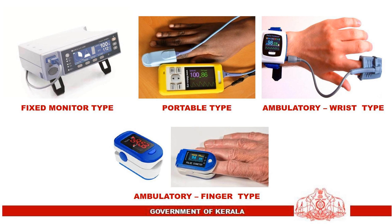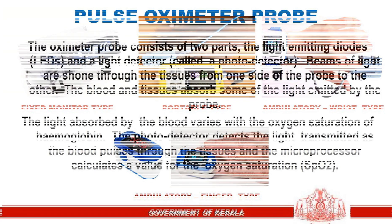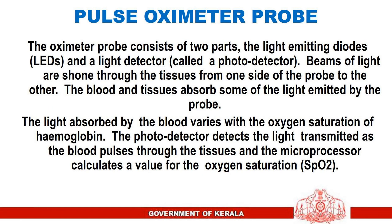The common types of pulse oximeters are: fixed monitor type, portable type, ambulatory wrist type, and ambulatory finger type. The pulse oximeter probe consists of two parts: the light emitting diodes and a light detector called a photo detector.